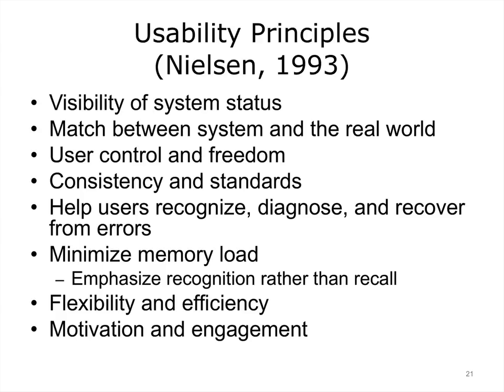Before proceeding further, let's review Nielsen's very general and broadly applicable usability principles. Visibility of system status refers to how easily one can determine the state of the system at a given moment in time — for example, if you just clicked on a link and it's taking a long time to load, you should be able to tell whether the server is slow or whether the page is no longer accessible. Match between system and the real world suggests that the system should speak the user's language using words, phrases, and concepts familiar to the user, and follow real-world conventions such as a button being pressed or a scroll bar sliding up and down.